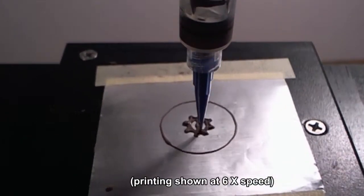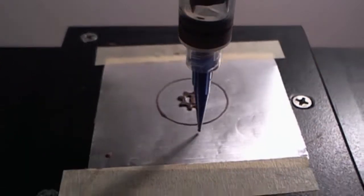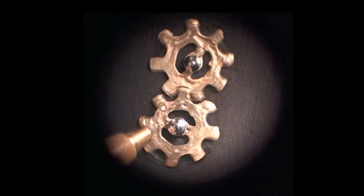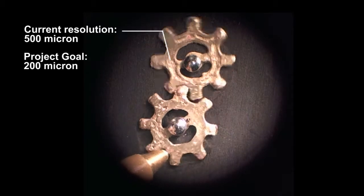In this demonstration with our first working prototype, spur gears are printed from bronze metal clay. Once kiln fired, the gears are of solid metal and can be turned by the tip of a pen, as demonstrated here under a microscope.